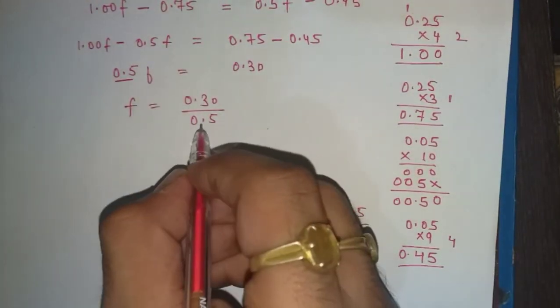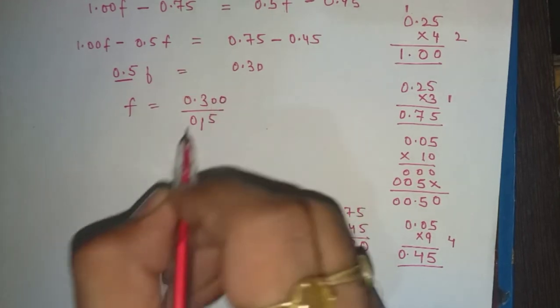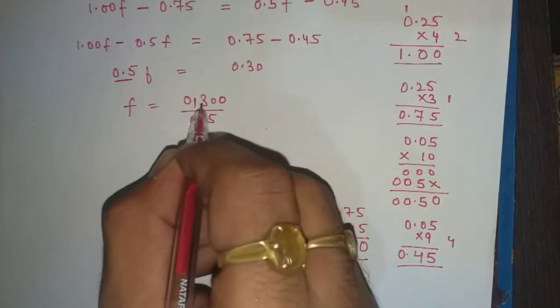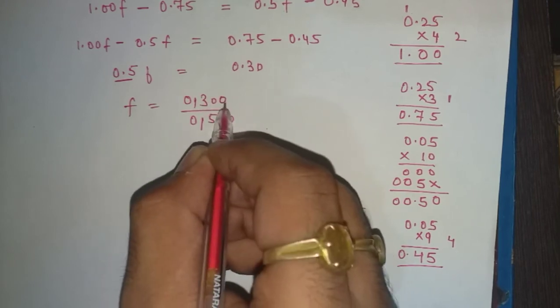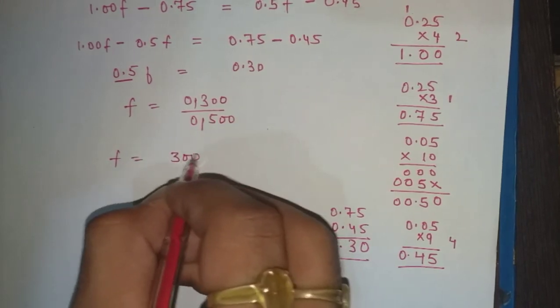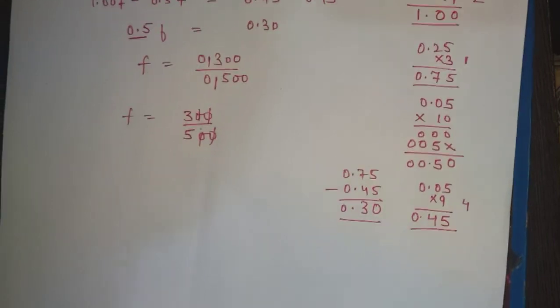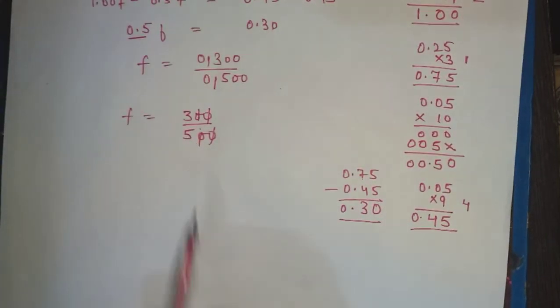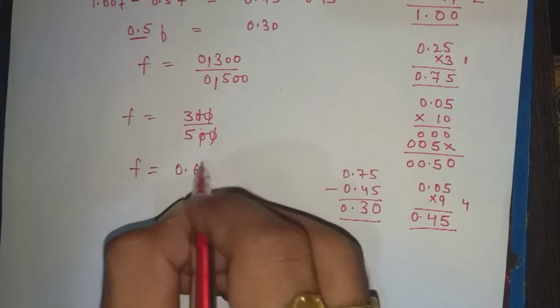First of all, you have to change the decimal point. If you move the point, you will go two places: 0.30 becomes 300 and 0.5 becomes 500. Zeros cancel, so f = 3/5. If you divide 3 by 5, then f = 0.6. The value is 0.6.